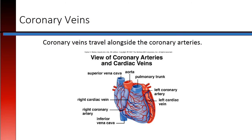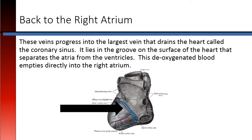Coronary veins travel alongside the coronary arteries. These veins progress into the largest vein that drains the heart, called the coronary sinus. It lies in the groove on the surface of the heart that separates the atria from the ventricles. This deoxygenated blood empties directly into the right atrium.